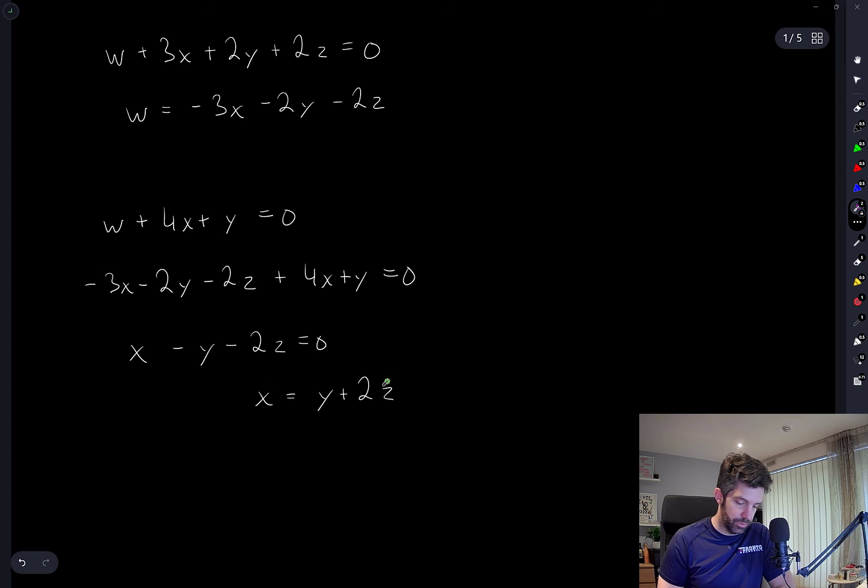And what I'll do now is I'll use this and substitute back up into here. So not only will I have X in terms of Y and Z, and when I make this substitution up there, I will then also have W in terms of only Y and Z.